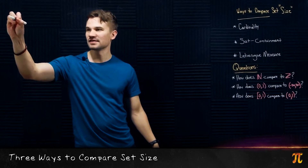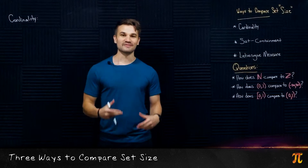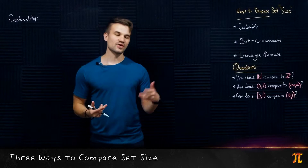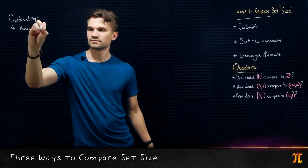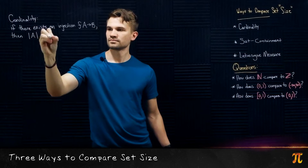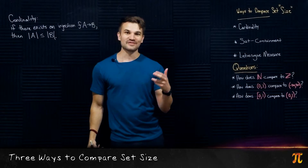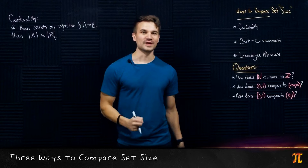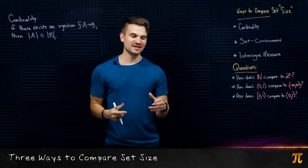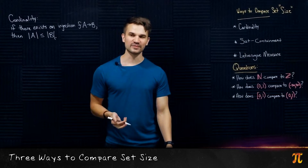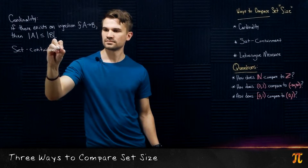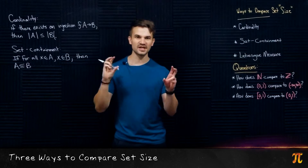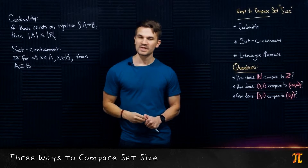So first let's remind ourselves what cardinality is. If we have two sets A and B and there exists an injective function from A to B, then the cardinality of A is less than or equal to the cardinality of B. In other words, if this function F exists and it's an injection, then A is smaller than B in the sense of cardinality. For set containment: if A is a subset of B, then in a certain sense A is smaller than B — it lies completely inside of B. So we have two notions of size: cardinality and set containment, and they mean two different things.